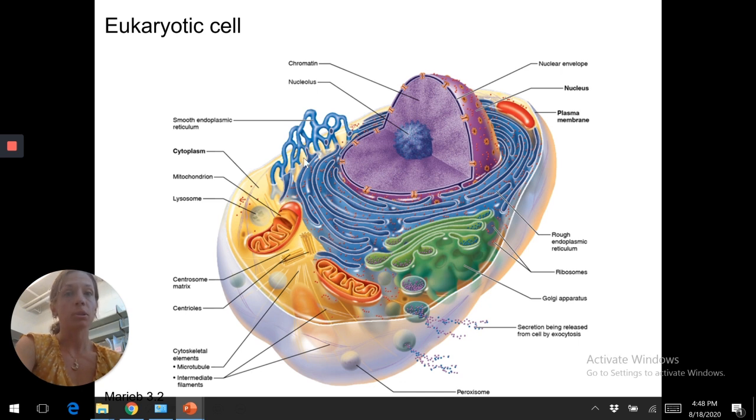The endoplasmic reticulum, they're smooth and rough. Rough endoplasmic reticulum is rough because it has ribosomes. Ribosomes make proteins. So this is involved in protein production.